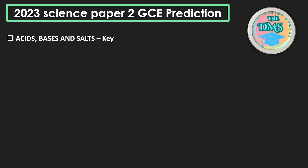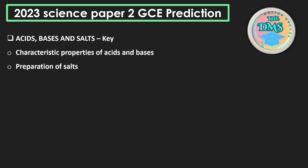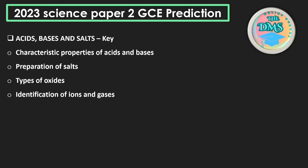Under acids, bases, and salts, you have characteristic properties of acids and bases, preparation of salts, types of oxides, and identification of ions and gases. The next topic is the mole concept, which is a key topic that does not miss. Under the mole concept, you need to know molar mass, relative atomic mass, concentration, limiting reagent, percentage yield, and percentage purity — all of these have been coming.